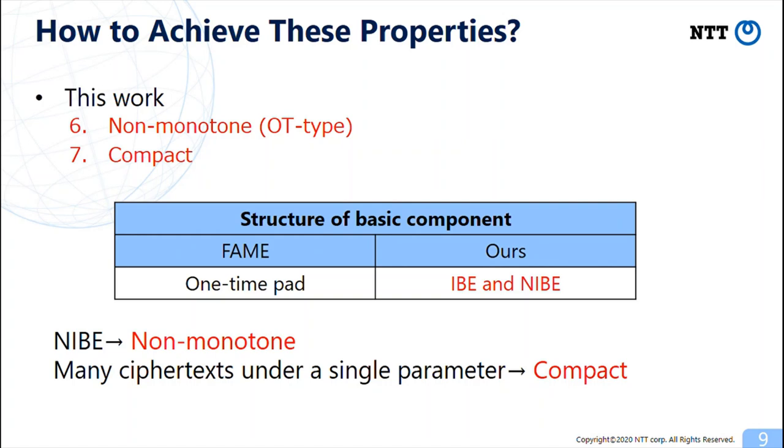The non-monotonicity of our schemes comes from the NIBE component and the compactness comes from the fact that IBE and NIBE allow us to generate many ciphertexts under a single parameter or a single public key.